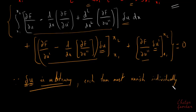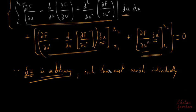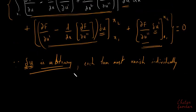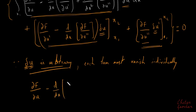Since δu is arbitrary, each term must vanish individually. The first term should equal zero, the second term should equal zero, and the third term should also equal zero.